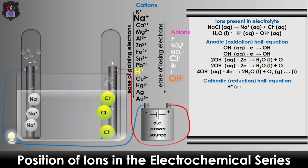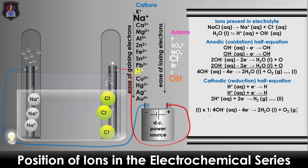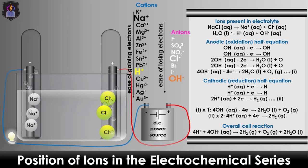Being a diatomic molecule, two hydrogen atoms combine to form a hydrogen gas molecule liberated at the cathode according to the cathodic half equation. To balance the number of moles of electrons transferred, multiply the anodic half equation by one and the cathodic half equation by two. Add the two equations to get the overall cell reaction.